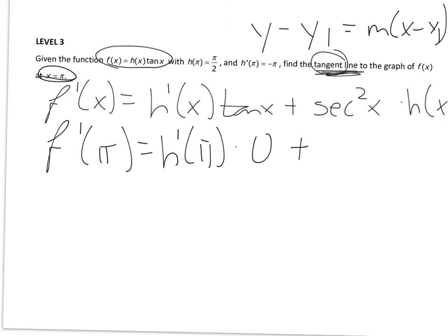Secant of pi. Well, the cosine of pi, the x coordinate, is negative 1. The reciprocal of negative 1 is negative 1. And negative 1 squared is positive 1.